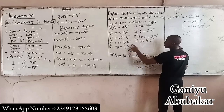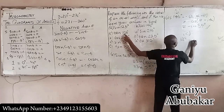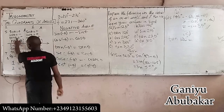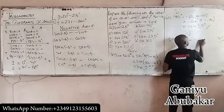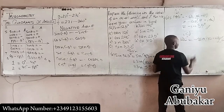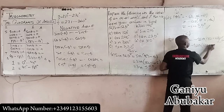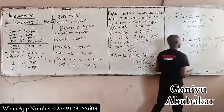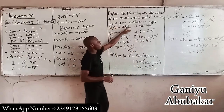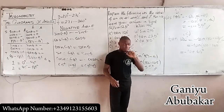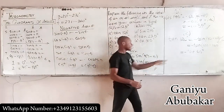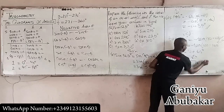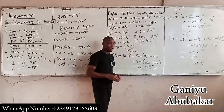For part (c): tan 120°. The value 120 is in the second quadrant, where tan is negative. So we have negative tan(180 − 120) = −tan 60°. From our special angles, tan 60° equals root 3, so the answer is −√3.